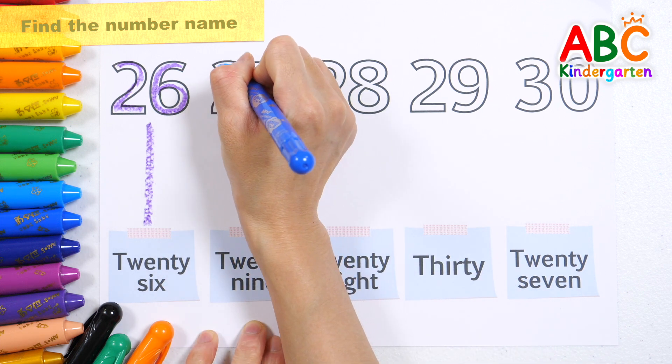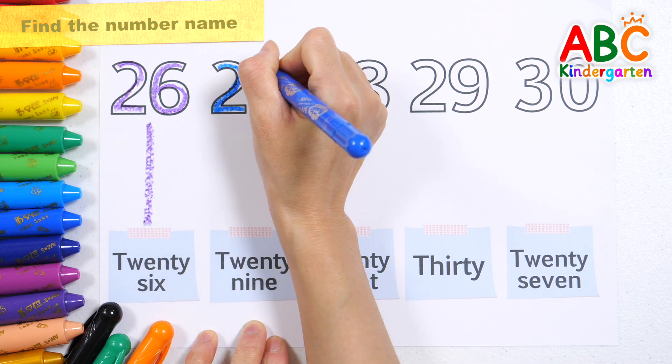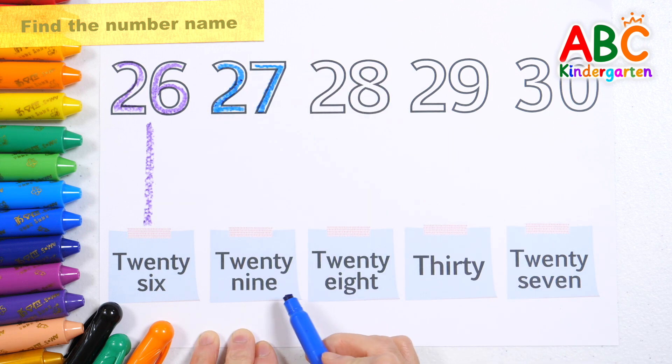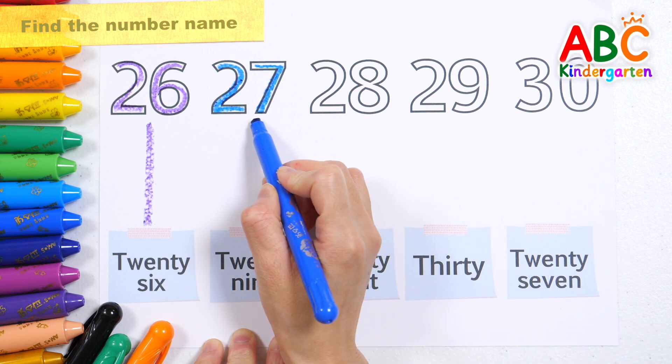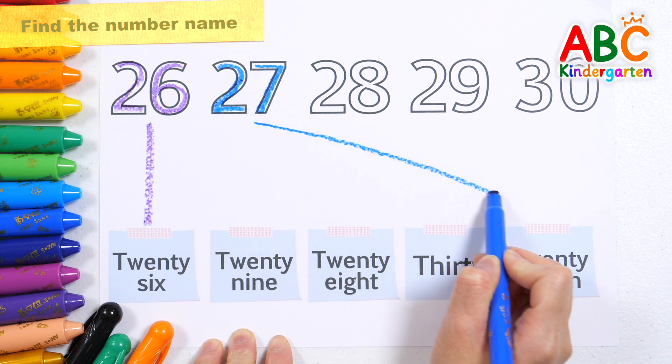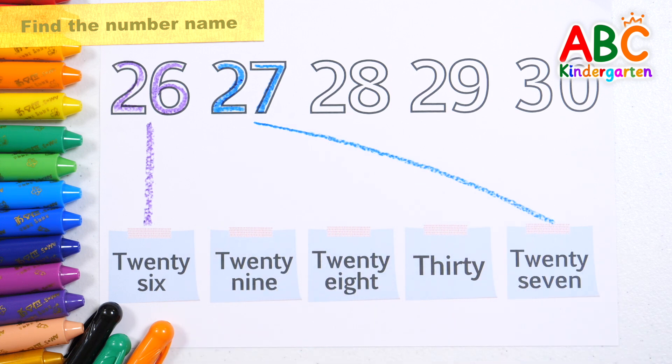27. This old man came rolling home. He played six, he played knick-knack on my sticks. That's right. Give a dog a bone. This old man came rolling home. 27.